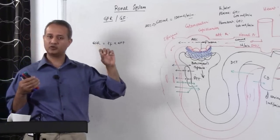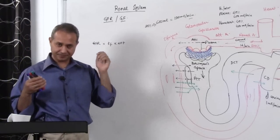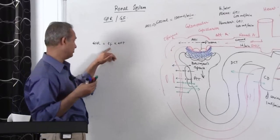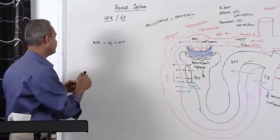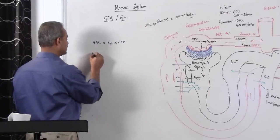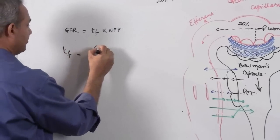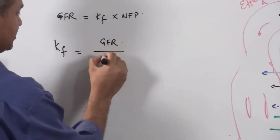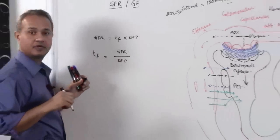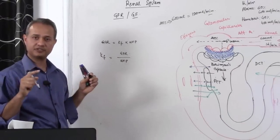So there is no mechanism, there is no test, there is no lab test that you can use to go and do the filtration coefficient measurement. So, filtration coefficient is measured indirectly by saying filtration coefficient equals GFR divided by net filtration pressure. That is how the filtration coefficient is measured.